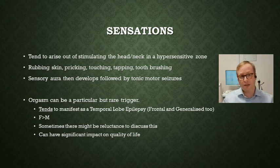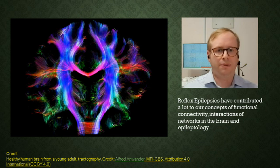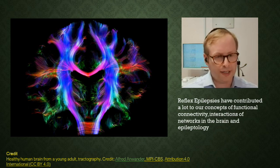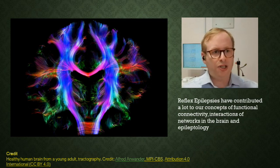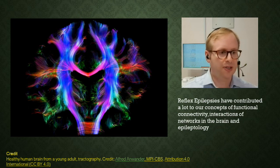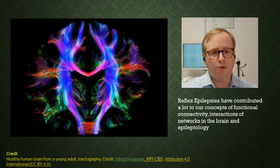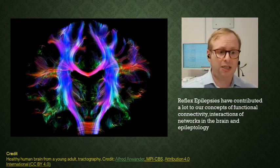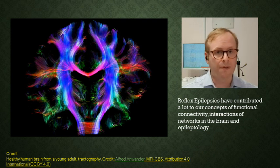The reflex epilepsies highlight a really important point about the complexity of the brain. There are huge networks which take information across large swathes of the brain from one part to the next, and they've contributed enormously to our understanding of functional connectivity and how different networks interact. In terms of epileptogenesis itself, this has moved our concept on from just a group of rogue neurons firing off and triggering seizures to the modern understanding of networks — how they are activated and how they spread signals to other parts of the brain.